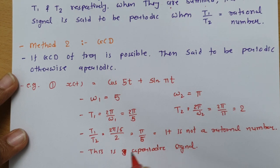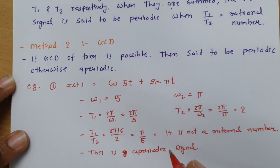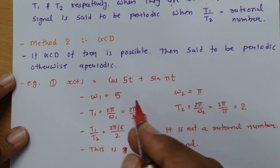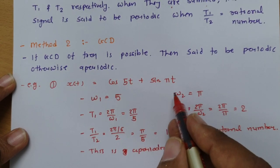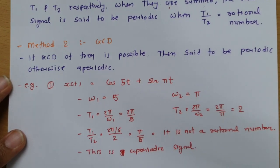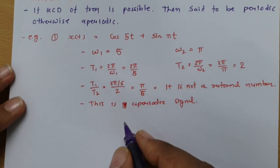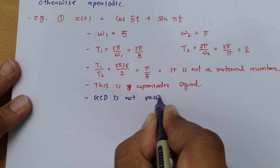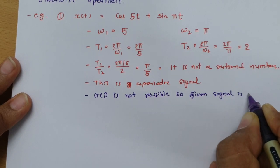We can also verify using the GCD method. We have ω1 = φ and ω2 = π. If you divide ω1 by ω2 there will be a remainder, so GCD is not possible. As GCD is not possible, the given signal is aperiodic.